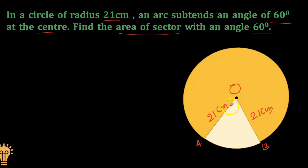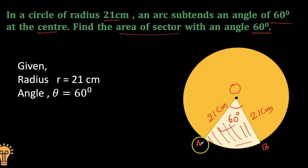Sector angle, that's also given: 60 degrees. We have to find the area of the sector, here this white region part. So whatever things are given, let us write: radius is 21 and theta is 60 degrees.